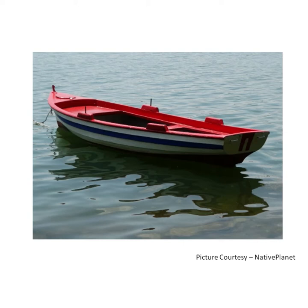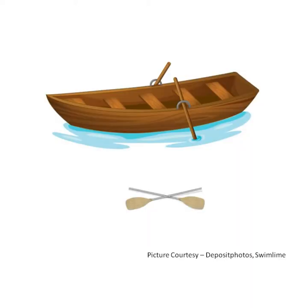This is a row boat. It is smaller than a ship and can be lifted out of the water. It moves on water with the help of oars.